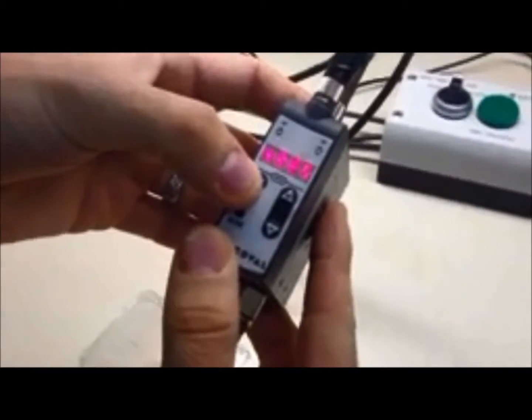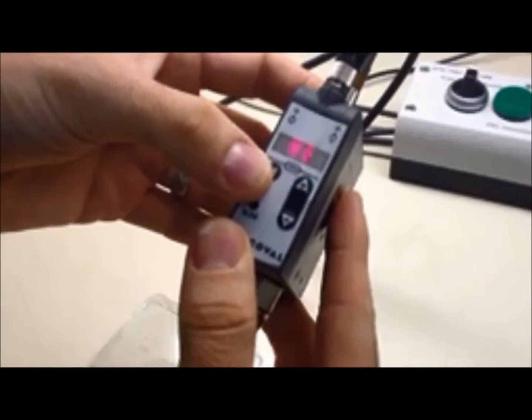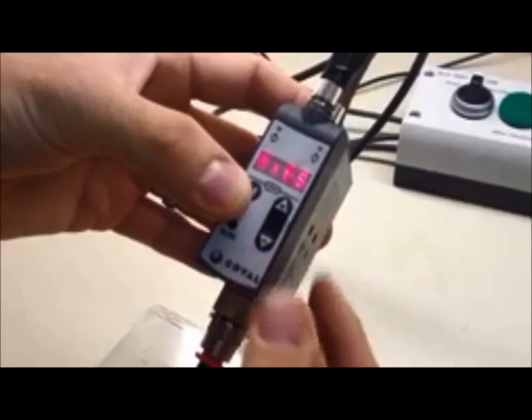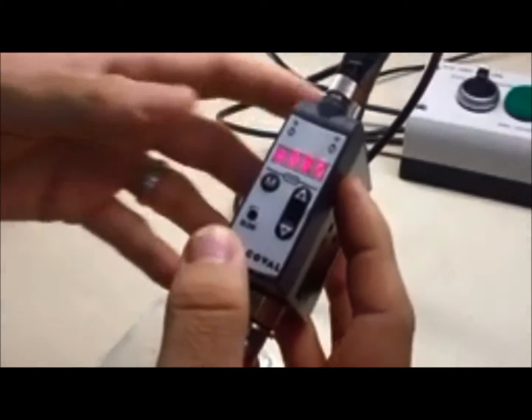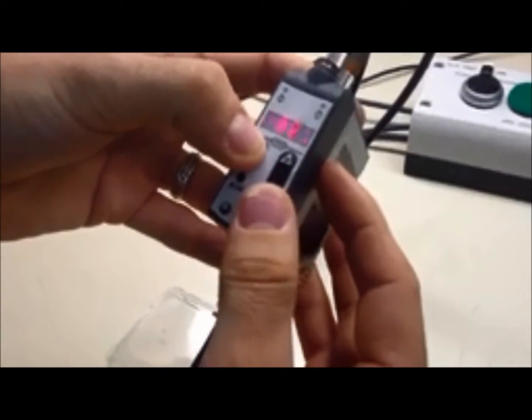Press your M button, your mode button. First is going to be your V1. And right now we are default settings. So your V1 is your signal to send, to run your operations, to move your part. Right now it's set at 65%.